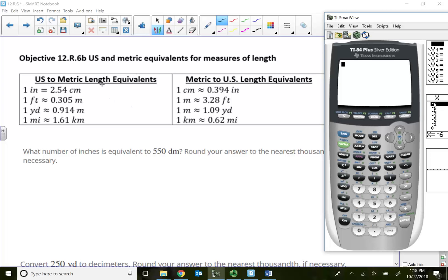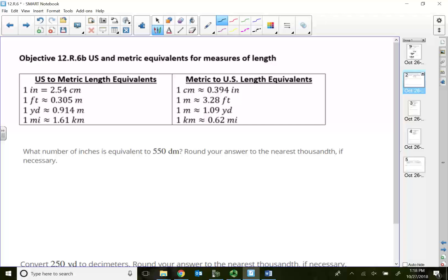Section 12.6 integrated review covers converting between metric and US lengths. Here are two different sides: US to metric equivalents and metric to US length equivalents. Which side do you use? Well, it depends on what you're starting with. If you're starting with US, use the left side. If you're starting with metric, use the right side. Make sure you use the correct side - that makes all the computation much easier.